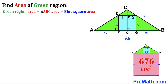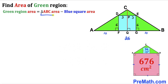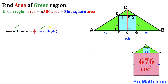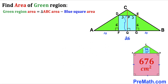The green shaded region area equals the area of triangle ABC minus the area of the blue square, which is 36. So we need to calculate the area of triangle ABC using the formula: Area = ½ × base × height. The base of triangle ABC is 26. We know PQ equals EG which is 6, so we only need to find the small length CP.